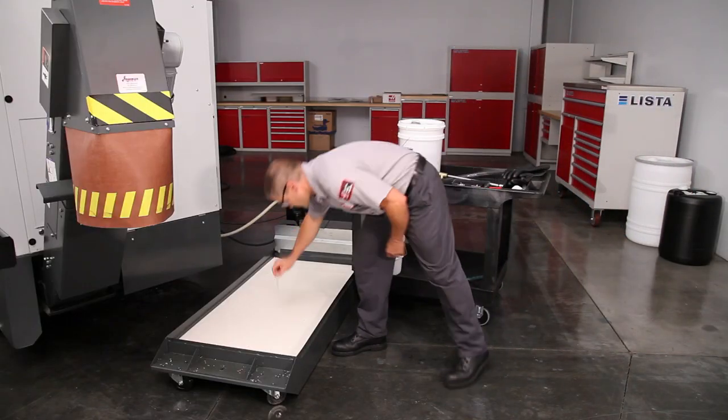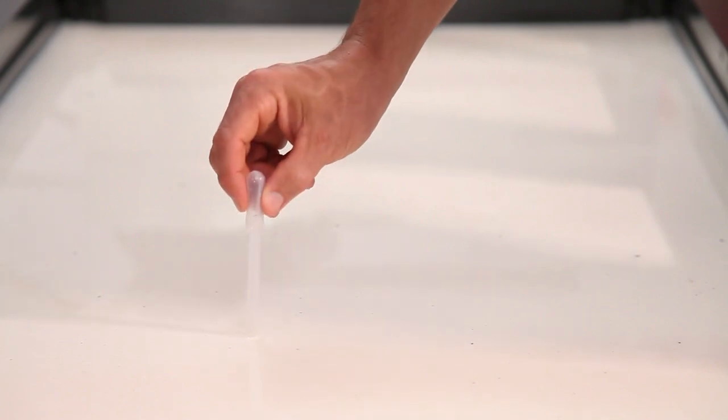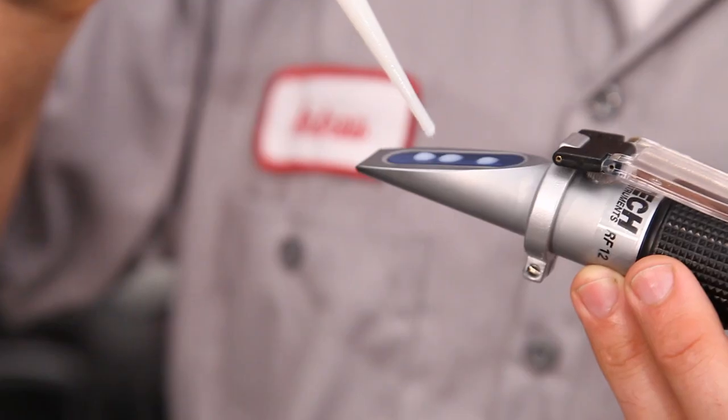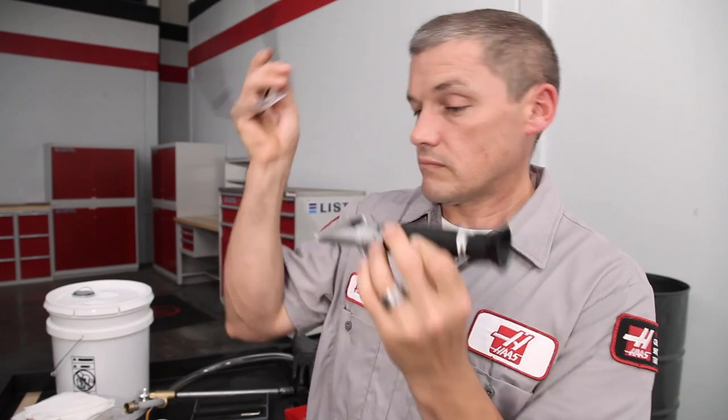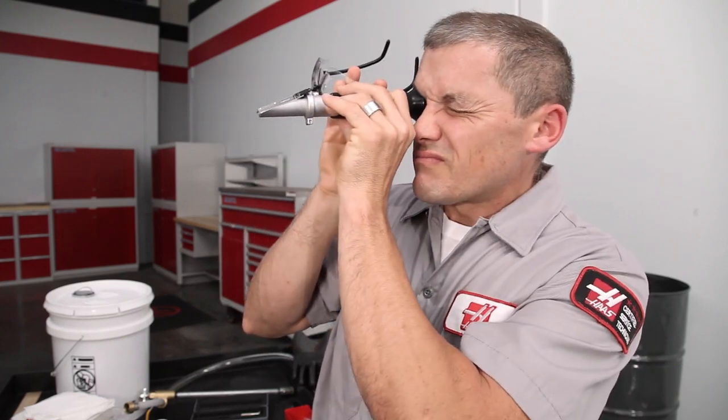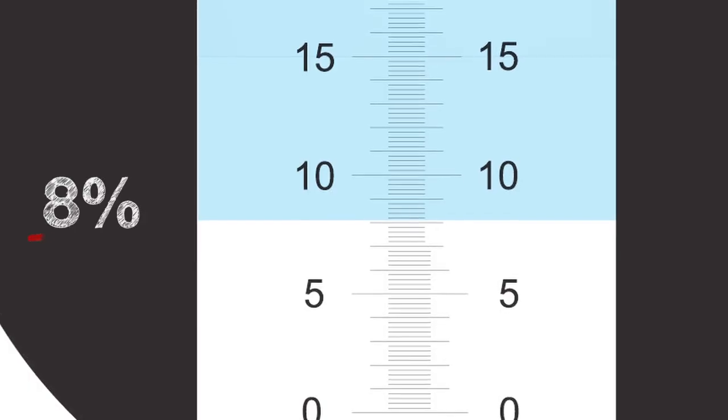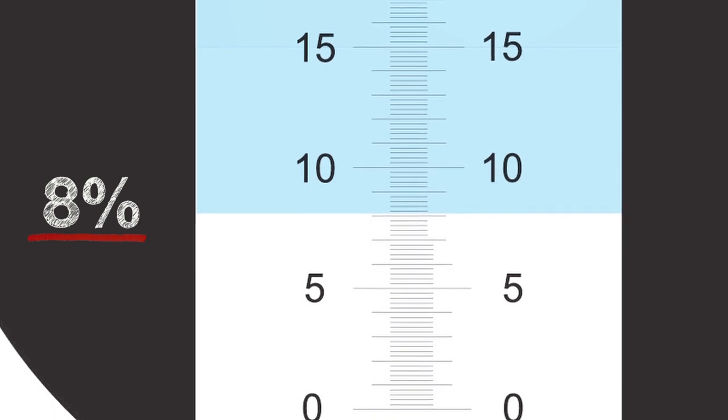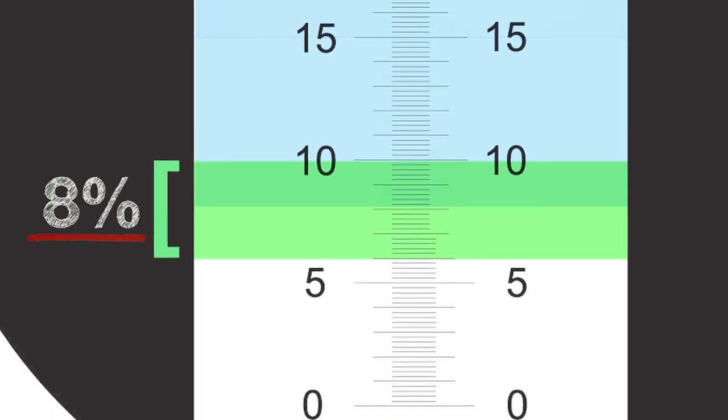Now, let's check the concentration of the coolant. Take a sample and place several drops on the prism. Let's see exactly where our concentration lies. In this case, it's 8%, right in the middle of the 6-10% range, which is acceptable for most coolants.